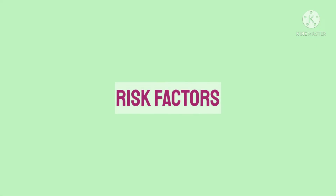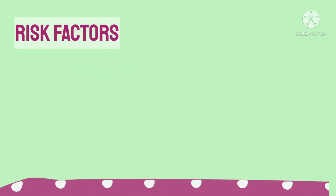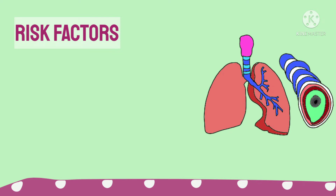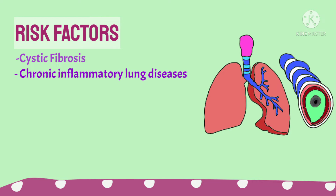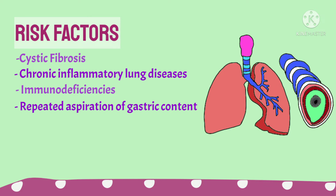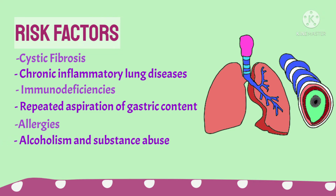The risk factors which can predispose a person to bronchiectasis are: cystic fibrosis, a genetic condition that affects cells that produce mucus, sweat, and gastric juices; chronic inflammatory lung diseases; immunodeficiency; repeated aspiration of food and other particles into the windpipe; allergies; alcoholism and substance abuse; and congenital problems. The risk of getting bronchiectasis increases with age, especially in a predisposed person.